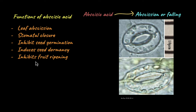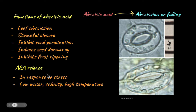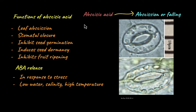Abscisic acid also inhibits fruit ripening in plants. Because of all this, abscisic acid or ABA is usually released in response to stress — it is a stress hormone. Examples of stress conditions include low water availability or drought conditions, which leads to stomatal closure, as well as high salinity and high temperatures. With this we are ending our video series on plant growth regulators. Can you think of a reason or a condition in which synthetic abscisic acid might be sprayed on plants? Think about it.